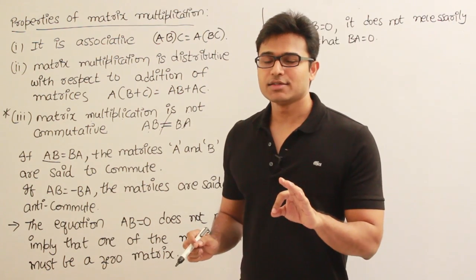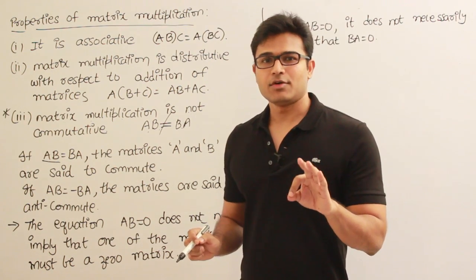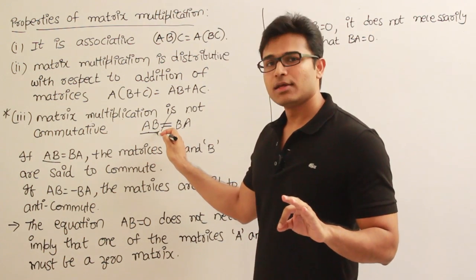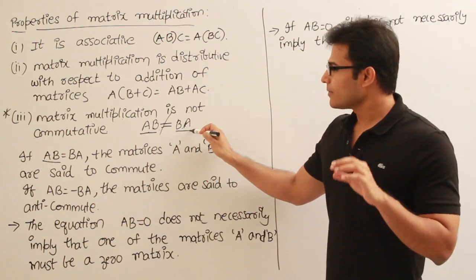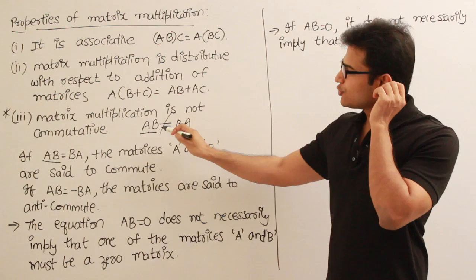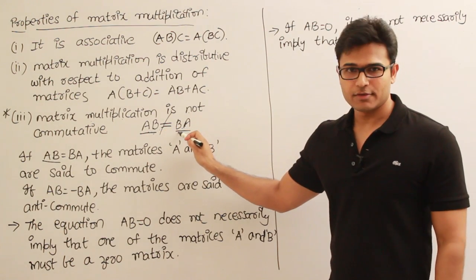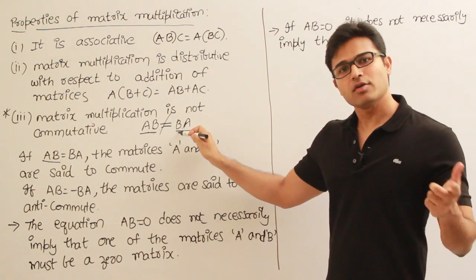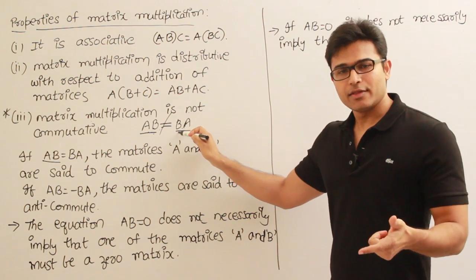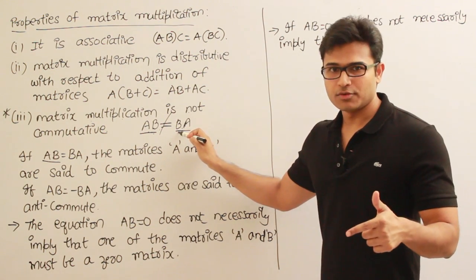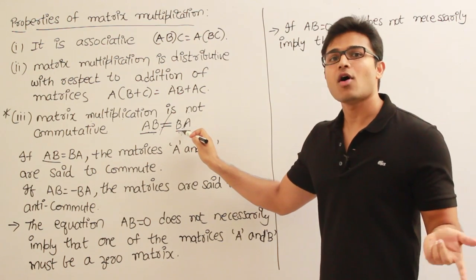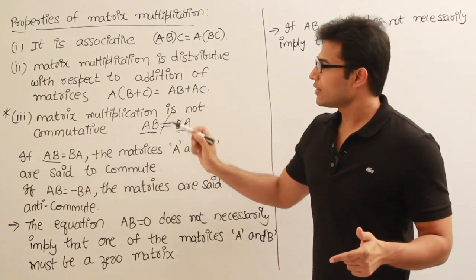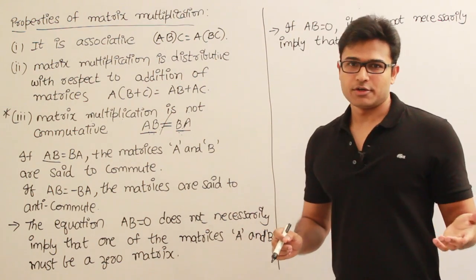What I mean is: whenever you have matrices A into B and then B into A, these two may or may not be equal. They may not always be equal. If they were always equal then we could say they are commutative, but since they may not always be equal, we say they are not commutative.